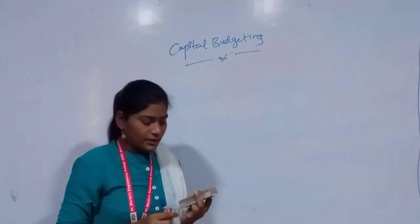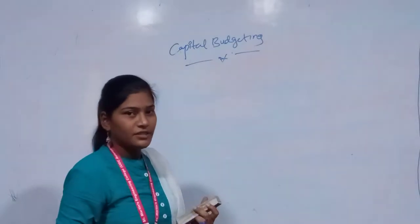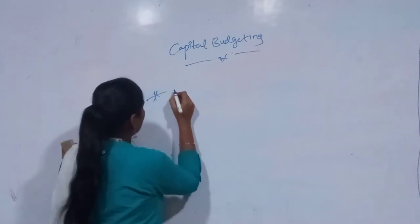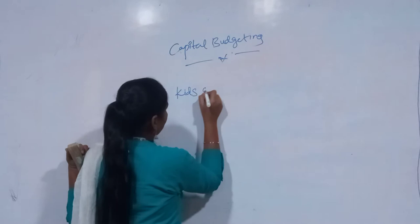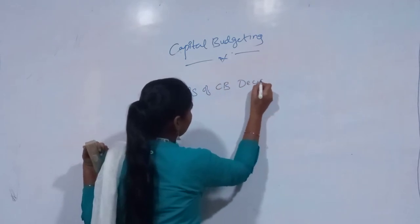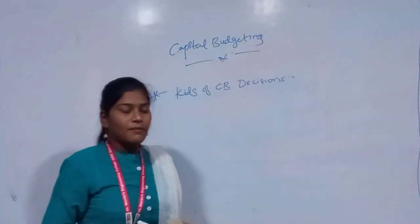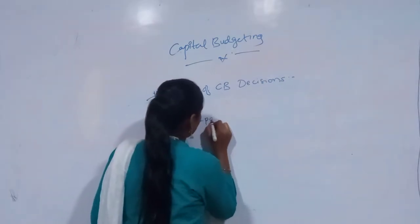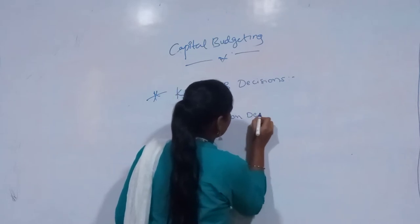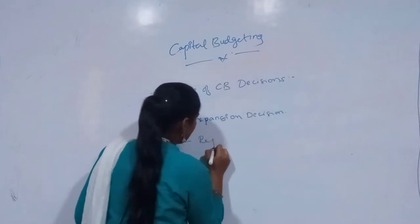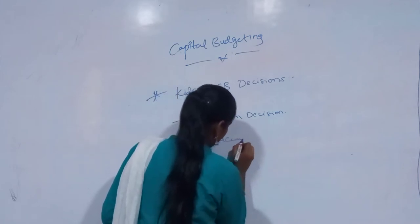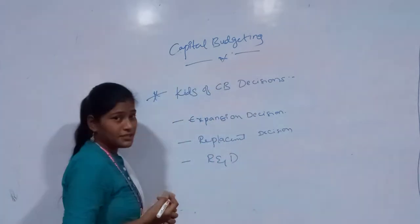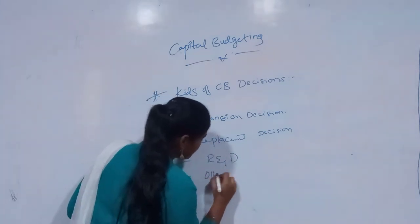We are now left with the kinds of capital budgeting decisions and the techniques used. The kinds of capital budgeting decisions that every organization needs to take are: expansion decisions, replacement of asset decisions, R&D — that is research and development — and there will be some other decisions that have to be taken as well.